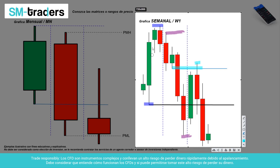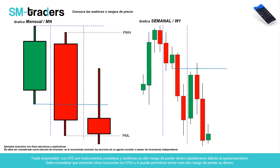Esta es la vela verde mensual, esta es la vela roja bajista, y esta formación se ve simplemente como una manipulación —esa gran spike que llega a capitalizar las órdenes. Si te bajas de temporalidad aún más, vas a poder ir refinando esos niveles. Por eso es importante que, al realizar un trade, puedas ir pasando de mensual a semanal, luego a la gráfica D1 o diaria, después a H4, H1, filtrando de manera que cada vez se hace más pequeño, ayudándote a reducir riesgos y tener mayor precisión.